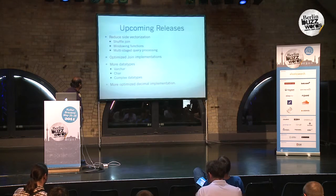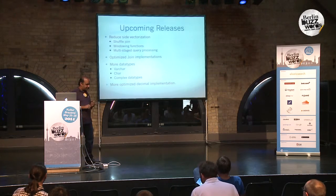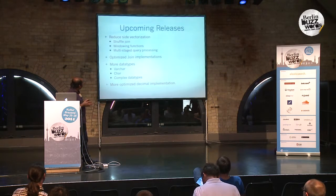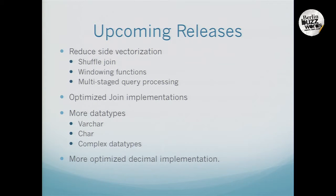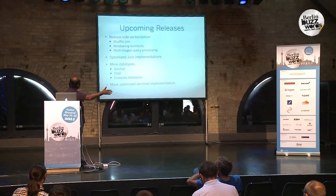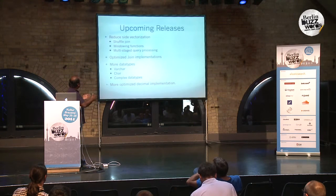More work is happening. This was a pretty big project because Hive has a very large code base and making changes there was a big undertaking. In future releases, we are working on the reducer-side vectorization. The idea is that data going from the mapper to the reducer side should also be read in vectorized form more efficiently, enabling more queries to benefit — like shuffle join or windowing functions, where most of the heavy computations happen on the reducer side. In general, any multi-stage query processing right now doesn't get the benefit of vectorization, and that is what we need to work on.